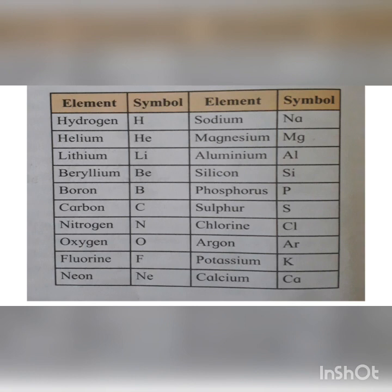Potassium has the symbol K. Potassium has a Latin name Kalium, and that is why it gets the symbol K. Potassium is a soft, silver-white metal.